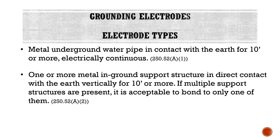A2, our in-ground support structures: one or more metal in-ground support structure in direct contact with the Earth vertically for 10 feet or more. It can't be laying flat; it has to be vertical in the ground. If multiple support structures are present, it is acceptable to bond to only one of them. For example, a large commercial steel-erected building may have multiple steel columns going into the ground — if that's the case, we only need to connect to one of them, because by nature of how a steel building is constructed, they'll all end up connected anyway.